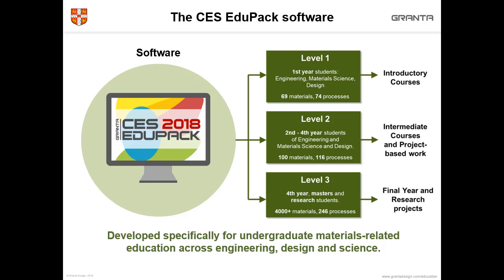At level 2 there are more materials and processes and more properties for each of these. And at level 3 there are more than 4,000 materials and specific grades so that you can do research projects and design projects.